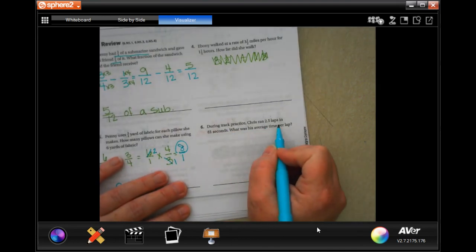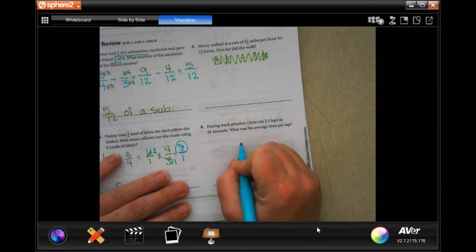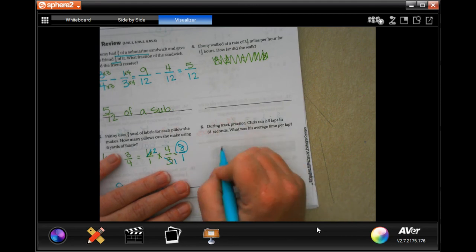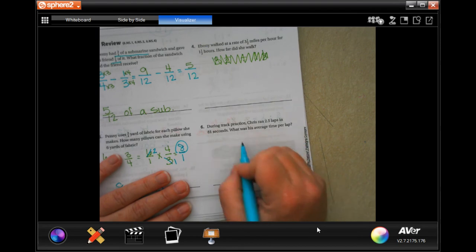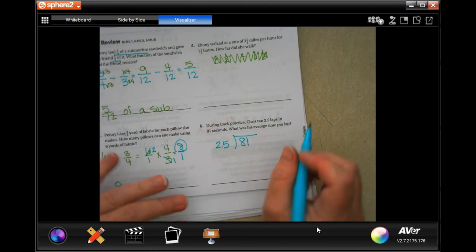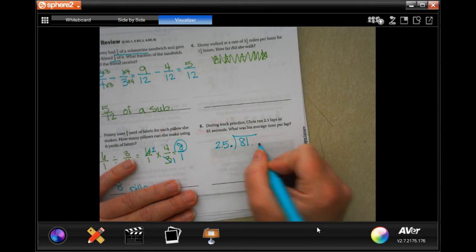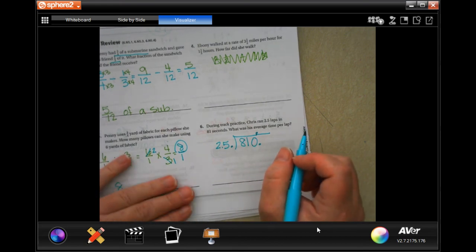During track practice, Chris ran 2 and a half laps in 81 seconds. What is the average time per lap? So we have to take those 81 seconds and divide it by 2.5. All right. So can't have a decimal on the outside. Can't have a decimal on the outside. So got to move it. I'm going to put a 0 there.